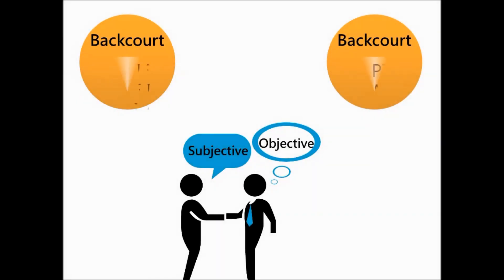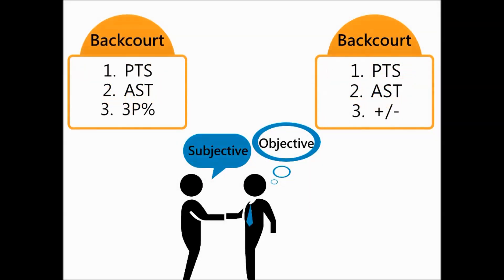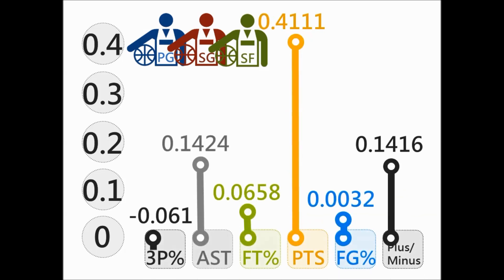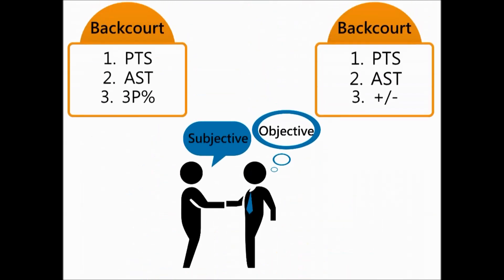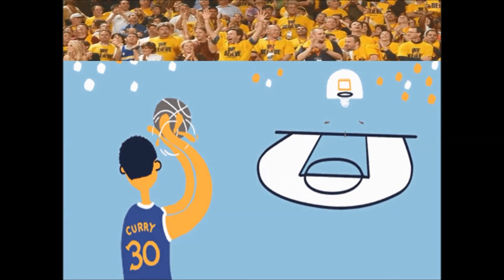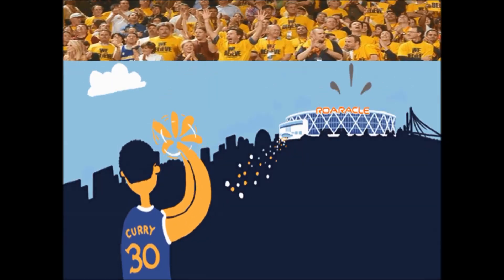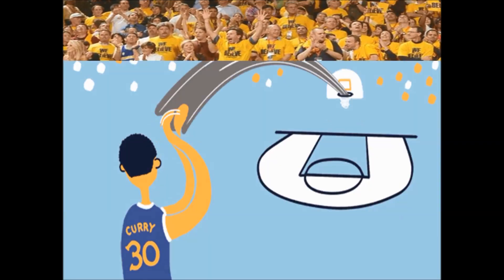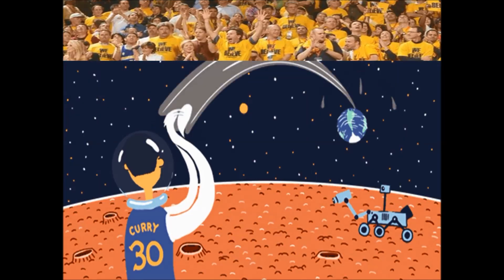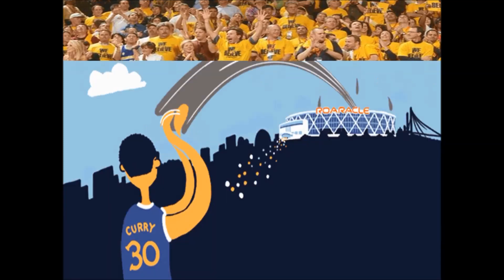For backcourt players, in the subjective viewpoint, the top 3 stats influential to wages are points, assists, and 3-pointer percentage. In the objective viewpoint, points, assists, and plus-minus stand out. The most notable difference between the subjective and objective data is 3-pointer percentage. We infer that when the Golden State Warriors went viral, the 3-point field goal prevailed in the NBA. For fans, competition in 3-point field goals adds more excitement to games. However, the 3-point field goal did not prevail during the period of data we tested.